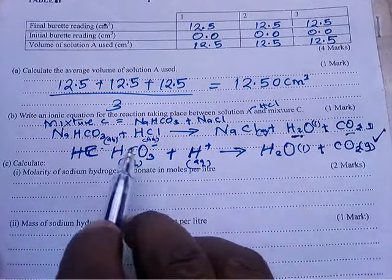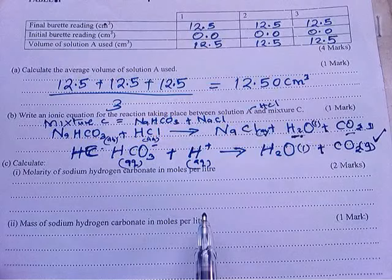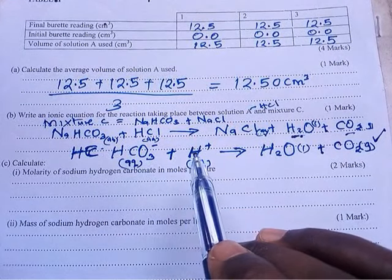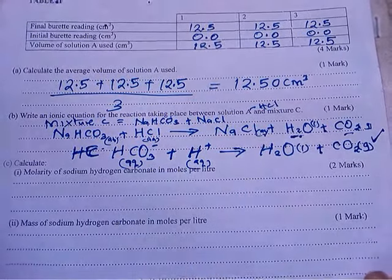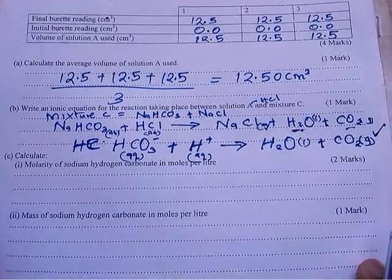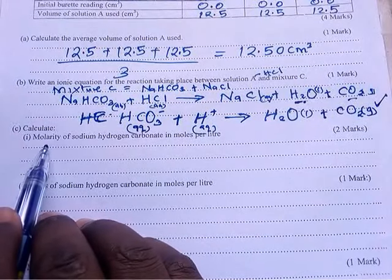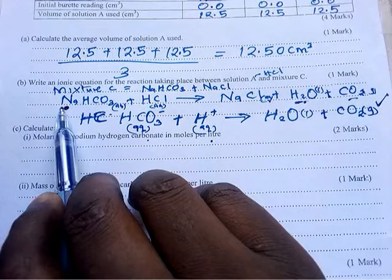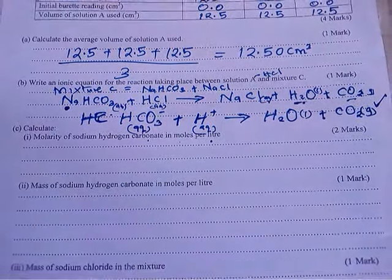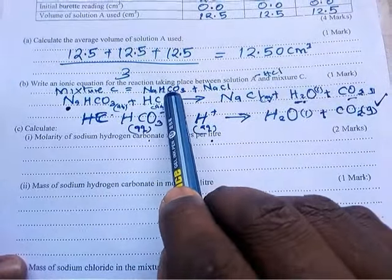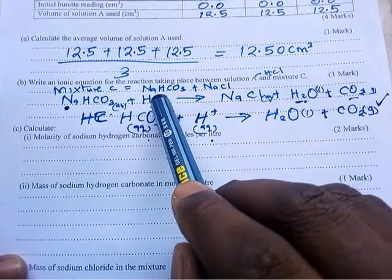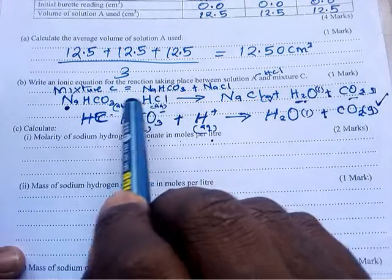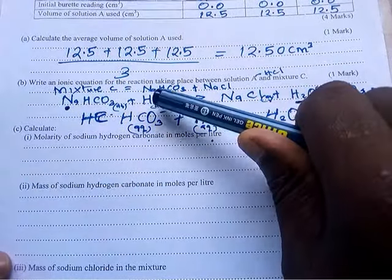There is a separate video on ionic equations on the channel — search 'ionic equation reactions' to find it. Now calculate the molarity of sodium hydrogen carbonate in moles per liter. Since HCl reacts with NaHCO₃ in a 1:1 ratio, finding the moles of HCl will give us the moles of sodium hydrogen carbonate directly.